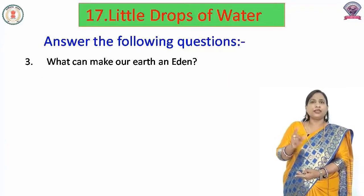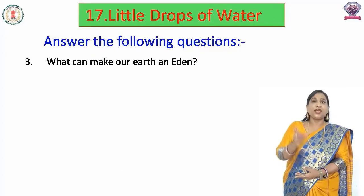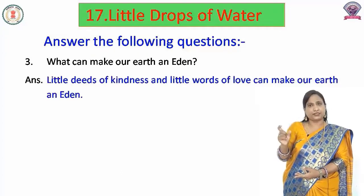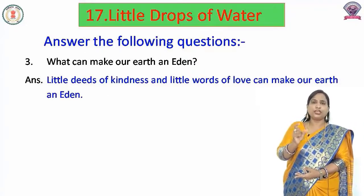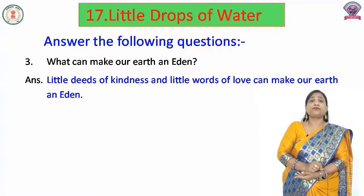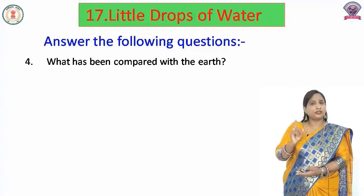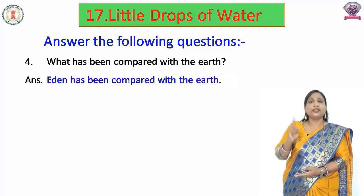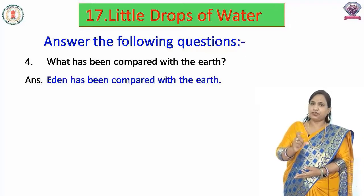Question number three: What can make our earth an Eden? Hamari prithvi ko korm se tattwa mil kar ek Eden bana sakti hain. To humne padha hai: little deeds of kindness and little words of love can make our earth an Eden. Prem ke chhoti chhoti bol aur dayaluta ke chhoti chhoti karni mil kar hamari prithvi ko ek Eden ki tara bana sakti hain. Question four: What has been compared with the earth? Prithvi se kis ki tulna ki gayi hai? Definitely Eden — Eden has been compared with the earth. Svarg ke bageeche, Eden se, prithvi ki tulna ki gayi hai.